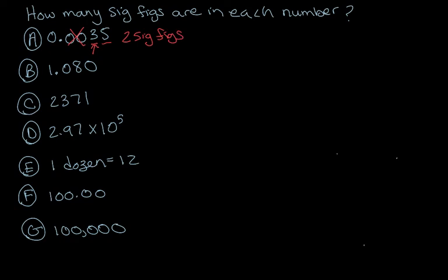Remember, if we wanted to write this in scientific notation, we would write this as 3.5 times 10 to the negative third. Notice that those zeros were being used as placeholders, nothing more. So they are not significant.